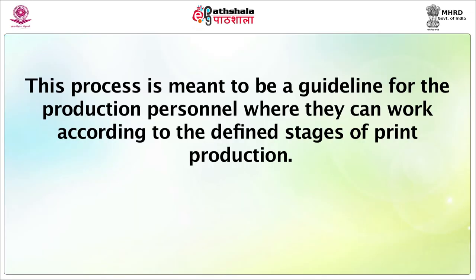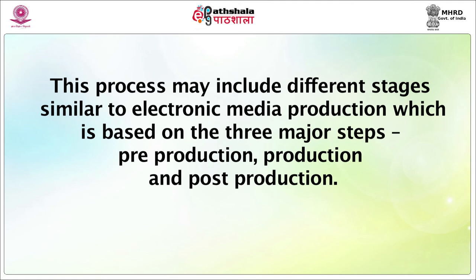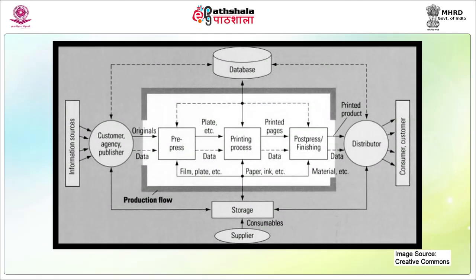The print production process includes various steps and procedures which help the production team to outline the development plan for print communication in the form of books, magazines, posters and the like. This process is meant to be a guideline for production personnel. Similar to electronic media production, it is based on three major steps: pre-production, production and post-production. Kiffin 2001 formulated the print media production flow that comprises the stages of pre-press, the actual printing process or press, and post-press which includes finishing the printing material.